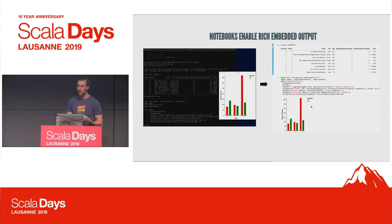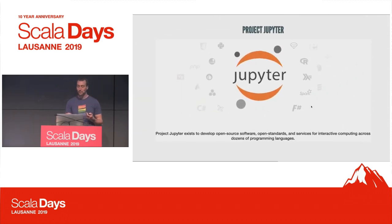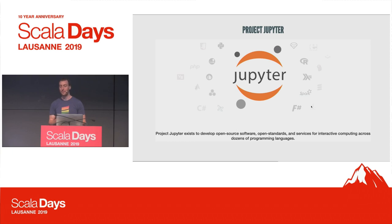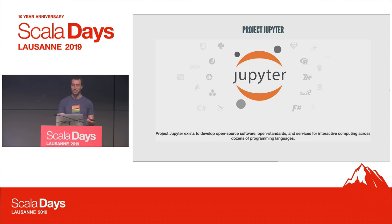So what I want to do next is look at the technologies behind this. The examples here were all run in the Jupyter Notebook. Jupyter is a huge project devoted to developing open source software, open standards, and services for interactive computing. It's not restricted to a single programming language — we have support for Python and R, C# and Java, but also functional languages like F#, Haskell, and of course Scala.